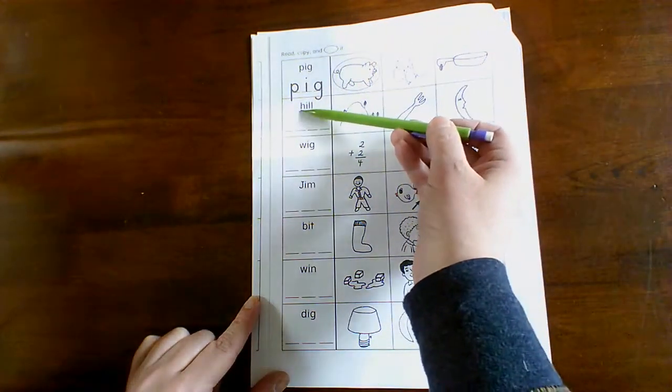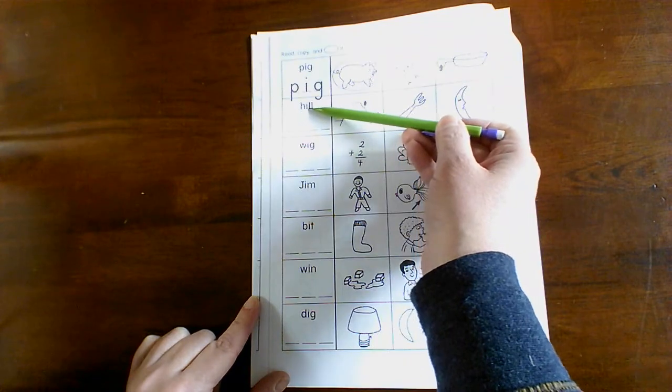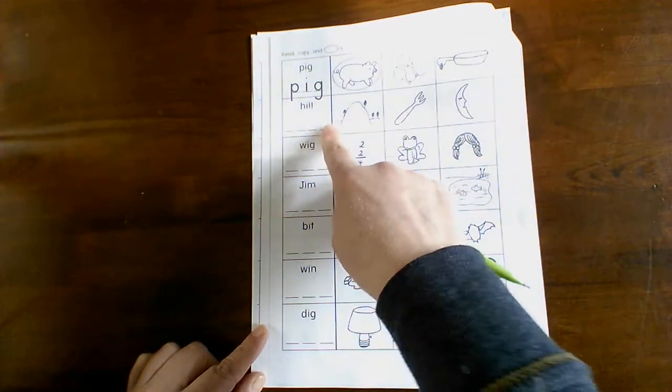So for each of them, sound it out, make the sound slowly, then say it fast. Copy the word and then circle the picture of it.